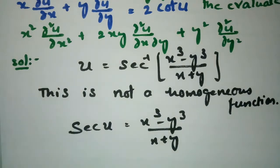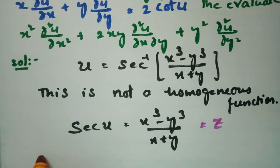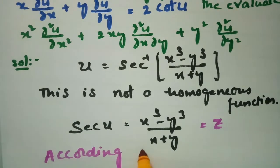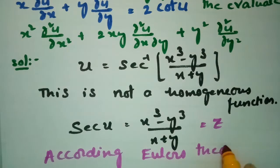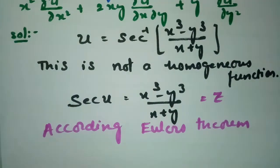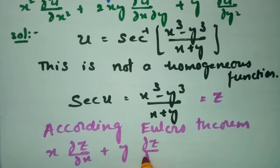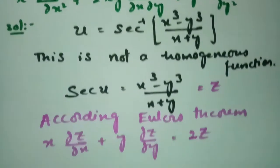According to Euler's theorem, we have x into ∂z/∂x plus y into ∂z/∂y equals nz. Here n is equal to 2, since the degree is 2.